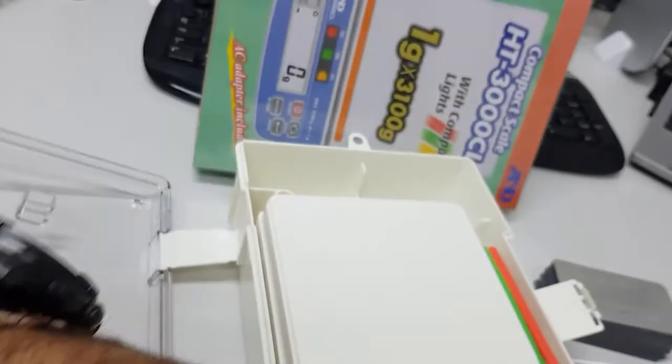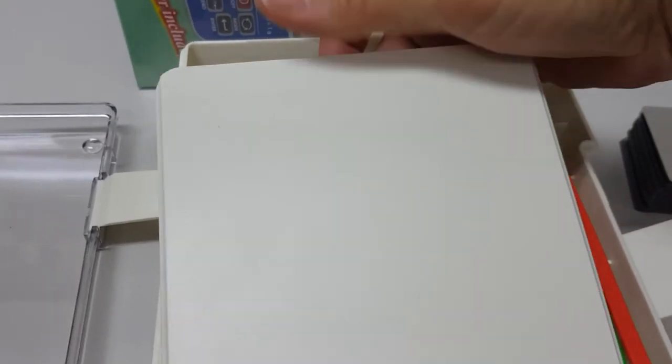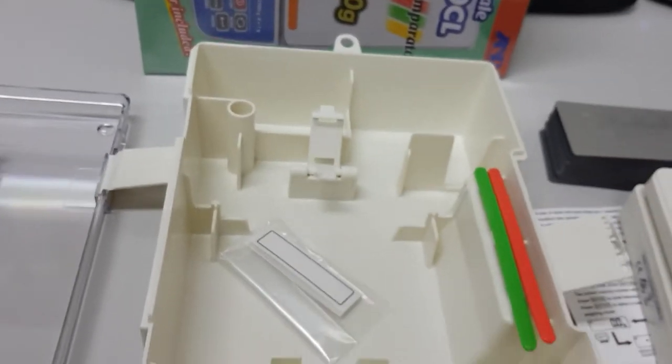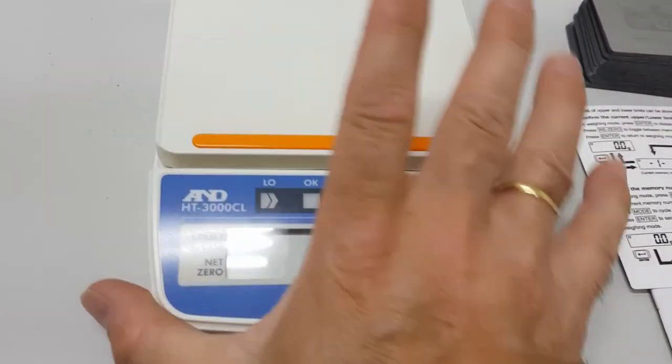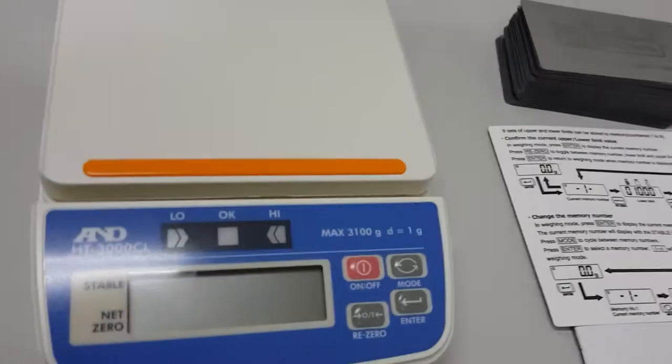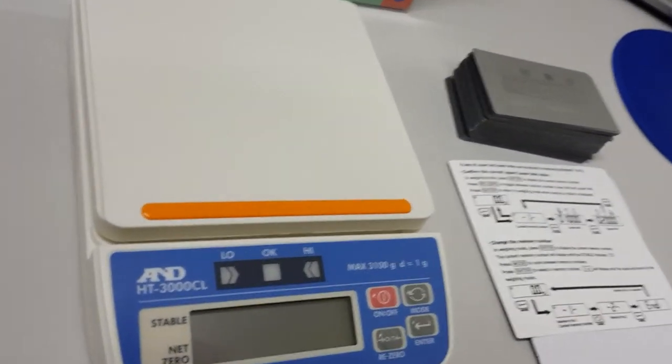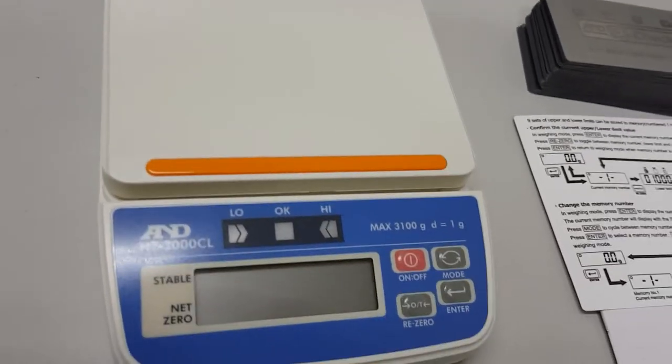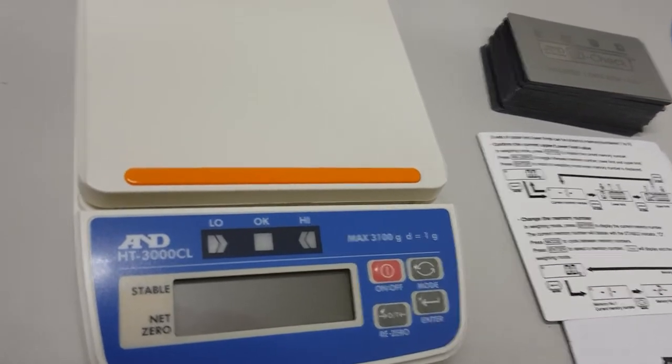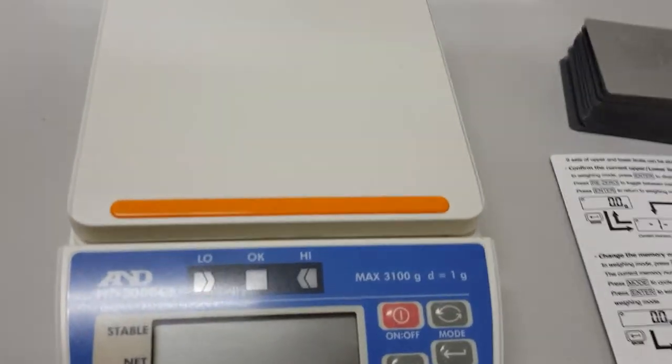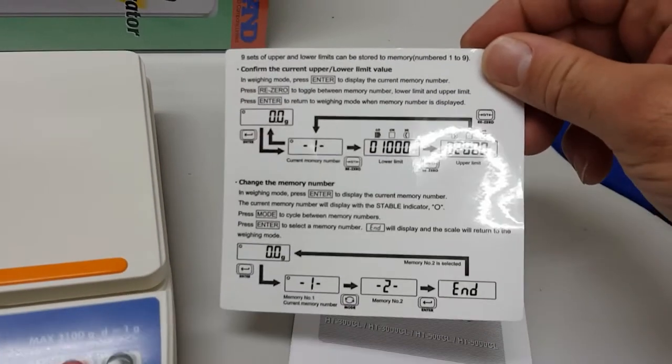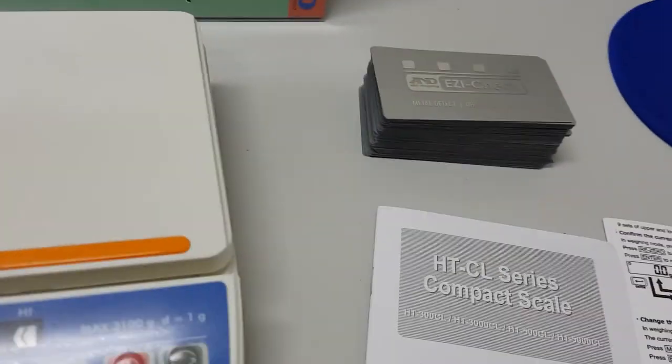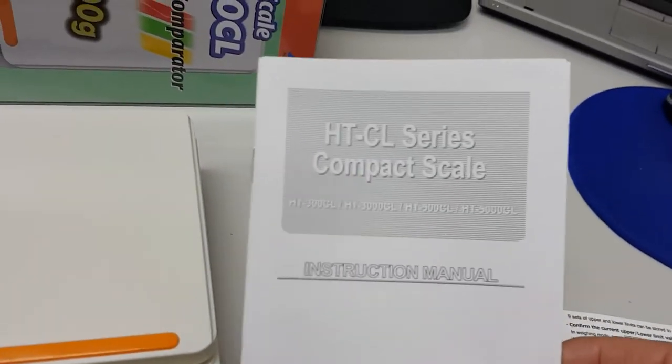Looking at the scale itself, very compact form factor. It's designed to be run on either batteries if you've got no power, so there's six double A batteries inside, or you can run it on a mains power pack which we also ship with the scale. Coming with it is a quick start guide to show you how to review the target settings and obviously for much more detail there's a full instruction manual.